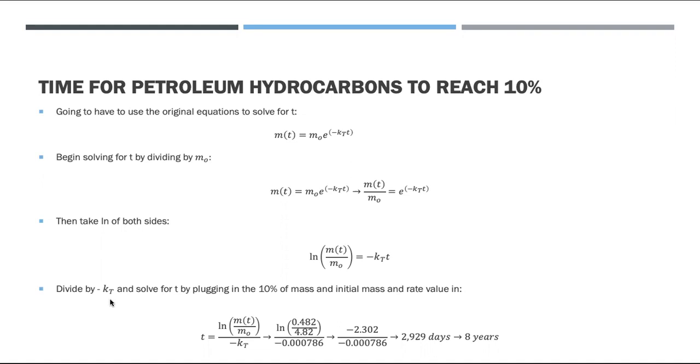We plug in our values where at 10% of its mass would be 0.482 grams divided by 4.82 grams. The natural log of that is negative 2.302 divided by negative K_T. You would get 2,929 days converted into years for a result of eight years.